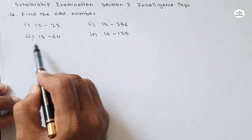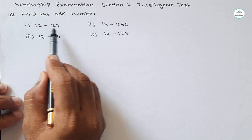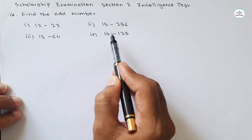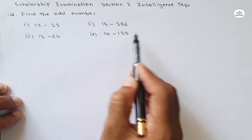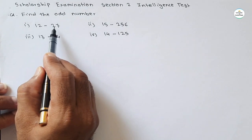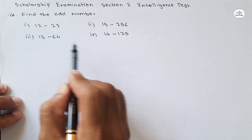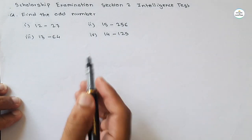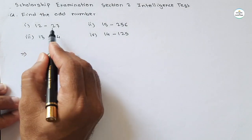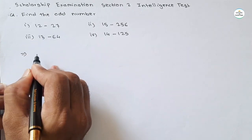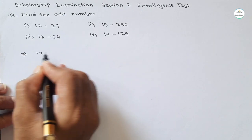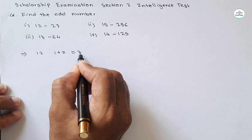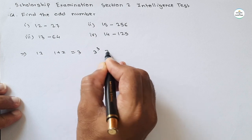Find the odd number — four groups of numbers are given: first is 12–27, second is 15–256, third is 13–64, and fourth is 14–125. We have to find the relation between the two numbers in each group; that relation must be the same for at least three groups, and the one that doesn't fit is the odd one. For the first group: 1 plus 2 equals 3, and the cube of 3 is 27 — so the relation works.